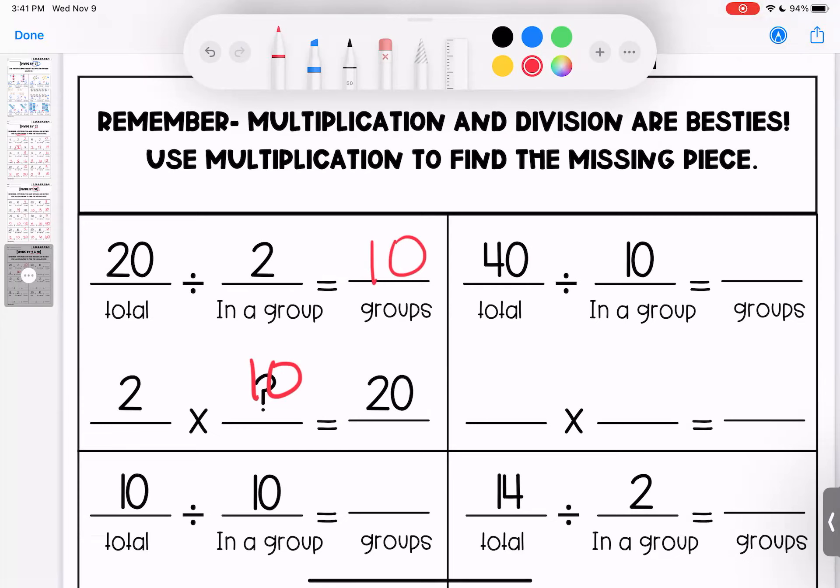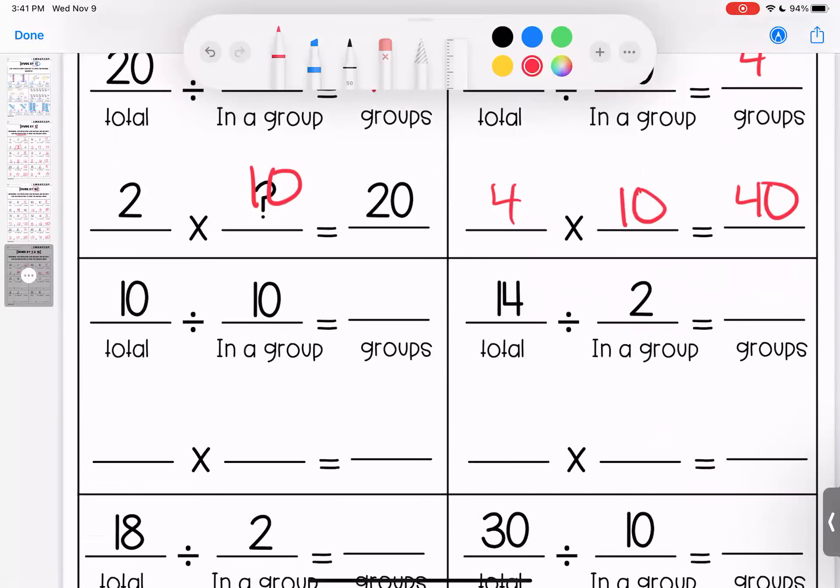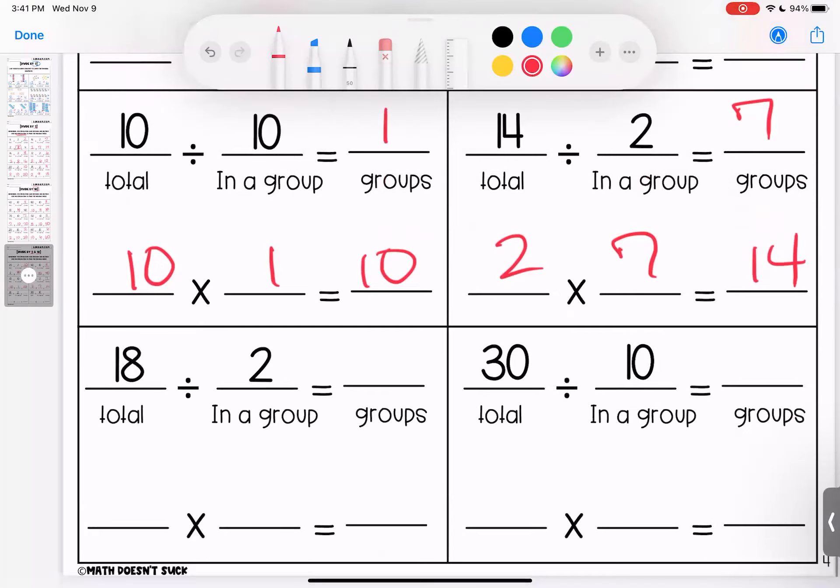Forty divided by ten is four because four times ten is forty. Fact families for the win. Ten divided by ten, be careful, is one because ten times one is ten. It's like a mirror. Forty divided or fourteen divided by two is seven because two times seven is fourteen. Eighteen divided by two is nine because two times nine is eighteen. And thirty divided by ten is three because three times ten is thirty.